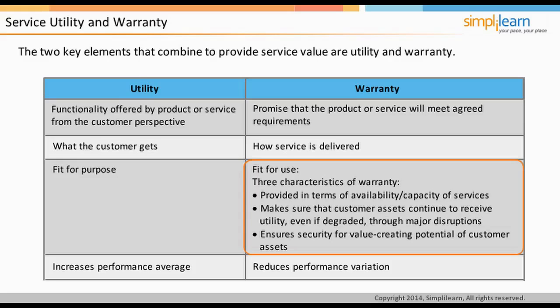Utility should meet the customer needs — that is, it should be fit for purpose. Warranty is the ability of the service to operate reliably — that is, it should be fit for use. There are three characteristics of warranty: it should be provided in terms of availability and capacity of services; it ensures customer assets continue to receive utility even if degraded through major disruptions; and it ensures security for the value-creating potential of customer assets. Utility increases performance average, whereas warranty reduces performance variation.